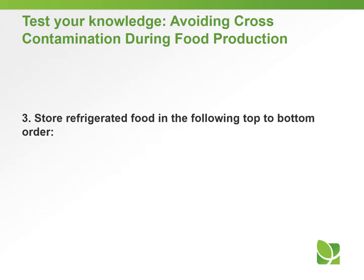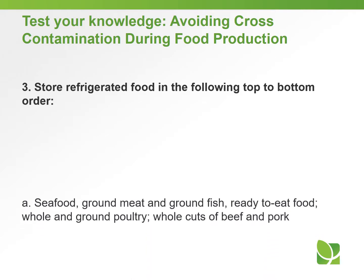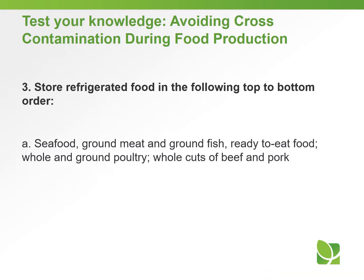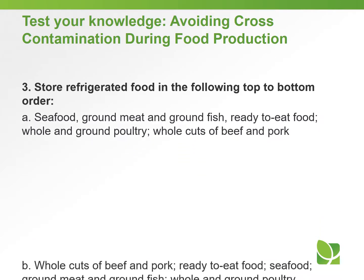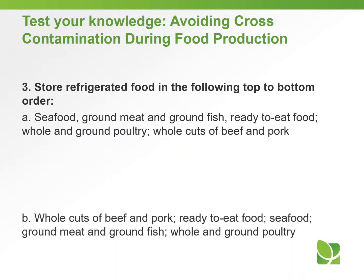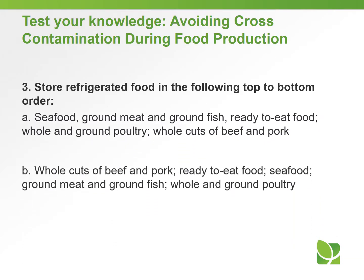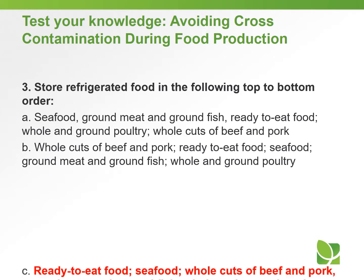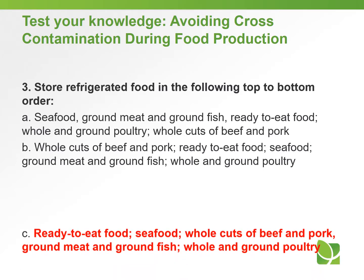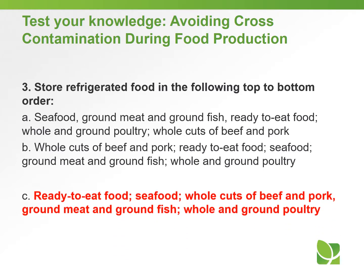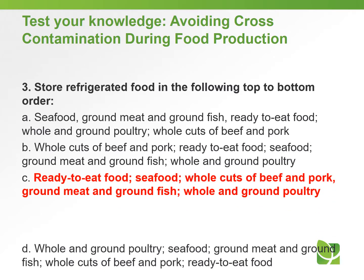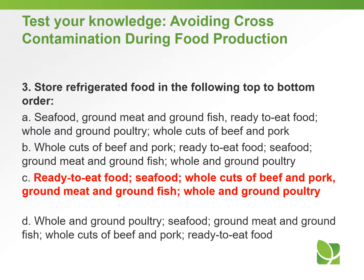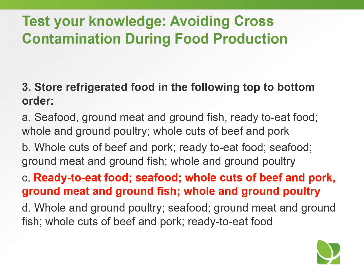Answer to question number three: Store refrigerated food in the following top-to-bottom order — the answer is C: ready-to-eat food, seafood, whole cuts of beef and pork, ground meat and ground fish, and always whole and ground poultry on the bottom.